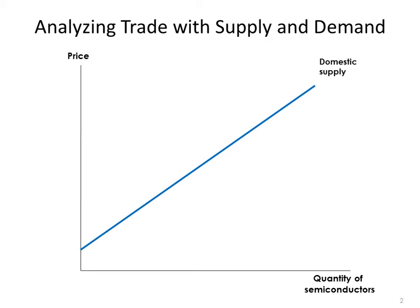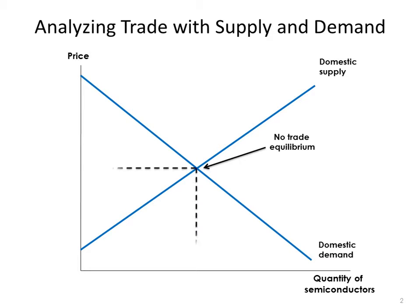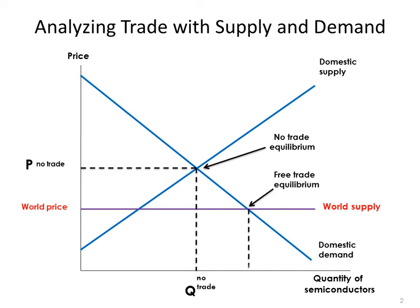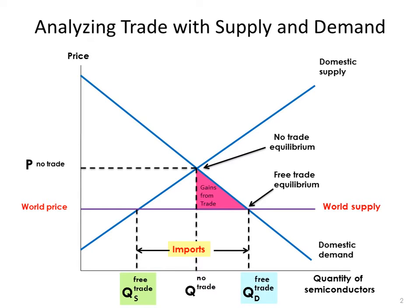Let's recap very quickly. Here is our usual situation: the domestic supply curve and the demand curve. Here is the no-trade equilibrium with the price and the quantity. Now, this country can buy as much as it wants at the world price. So domestic demand increases, domestic production decreases, we get a bunch of imports, and we know that has two good welfare effects: increased gains from trade as people buy more, and resource savings as production shifts from the high-cost domestic industry to the lower-cost world industry. That's the situation with international trade and a competitive domestic industry.